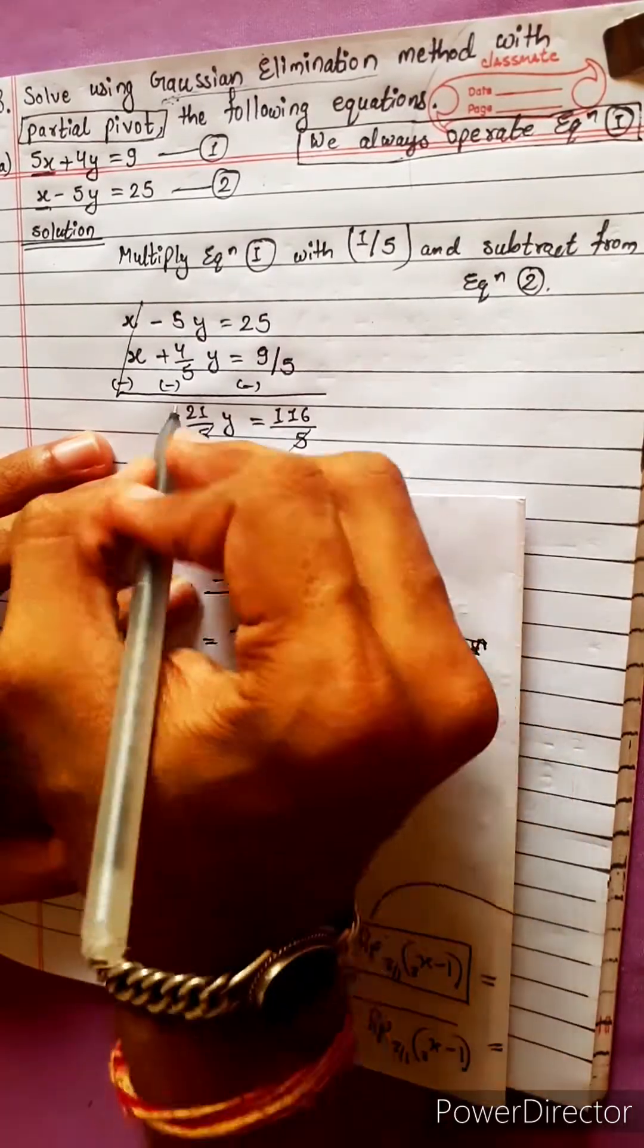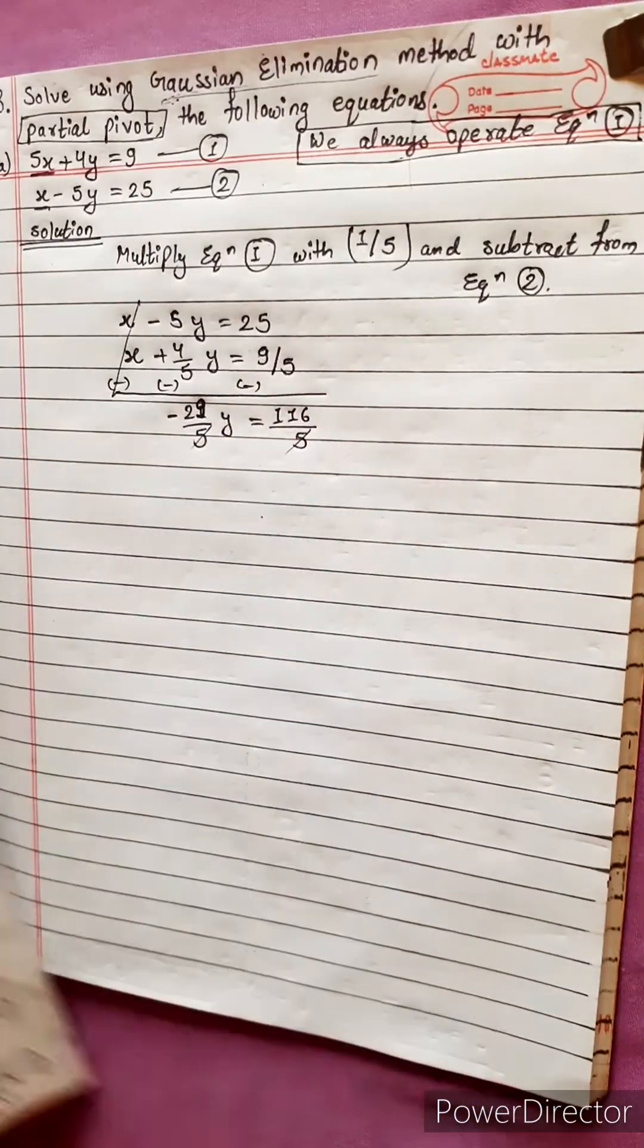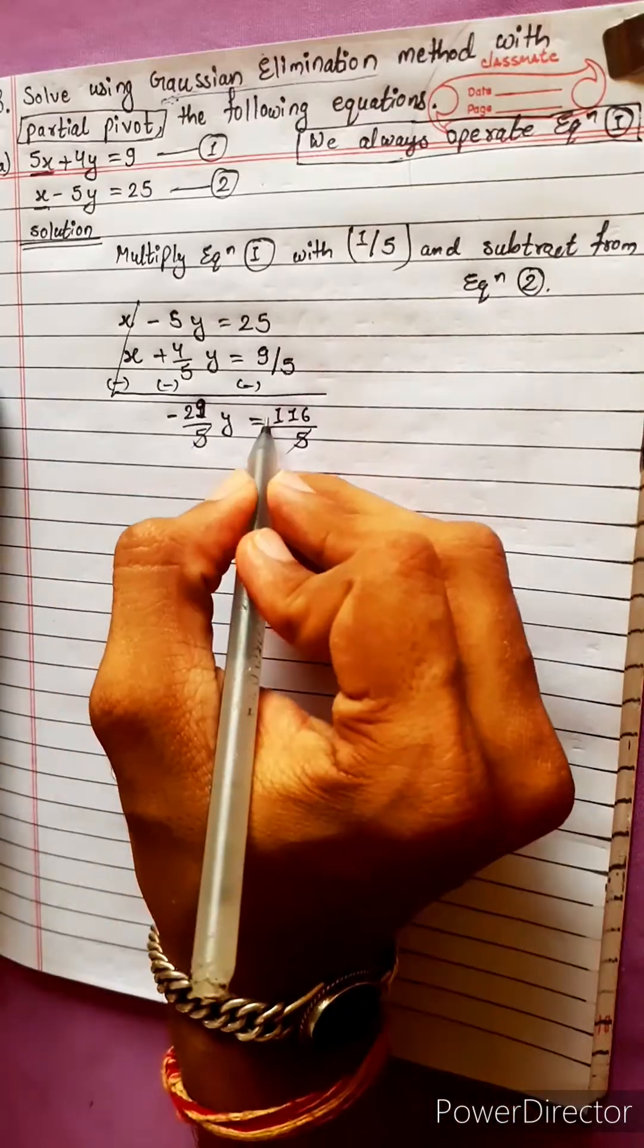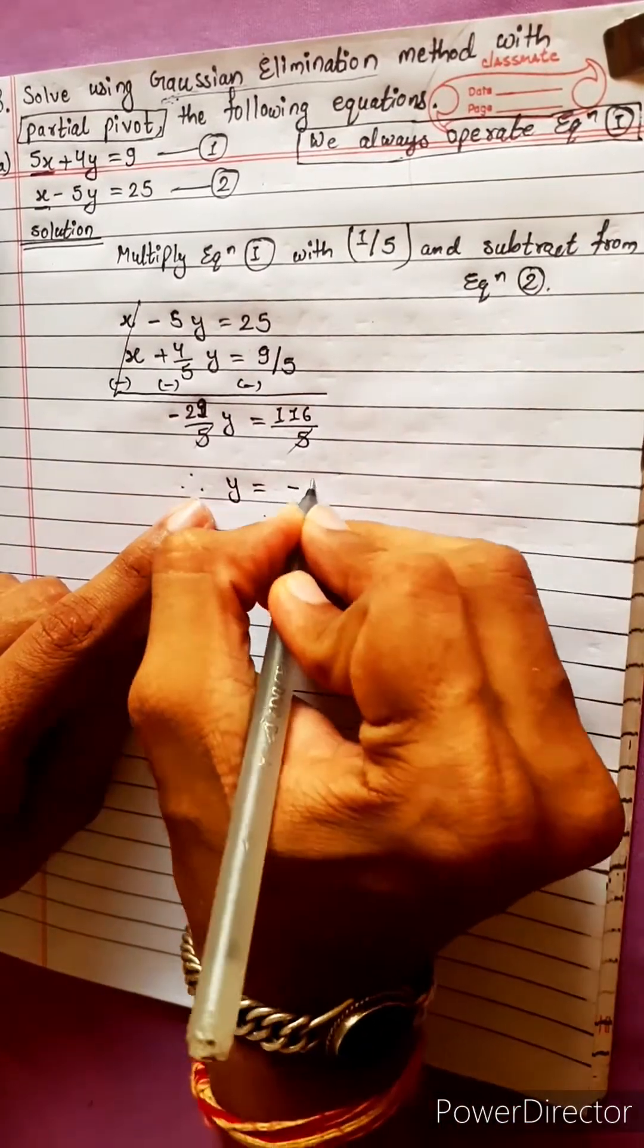Oh, this should be minus 29, not 21. Now let's divide again: 116 divided by 29 equals 4. Here is positive, here is negative. Therefore, y equals to negative 4.